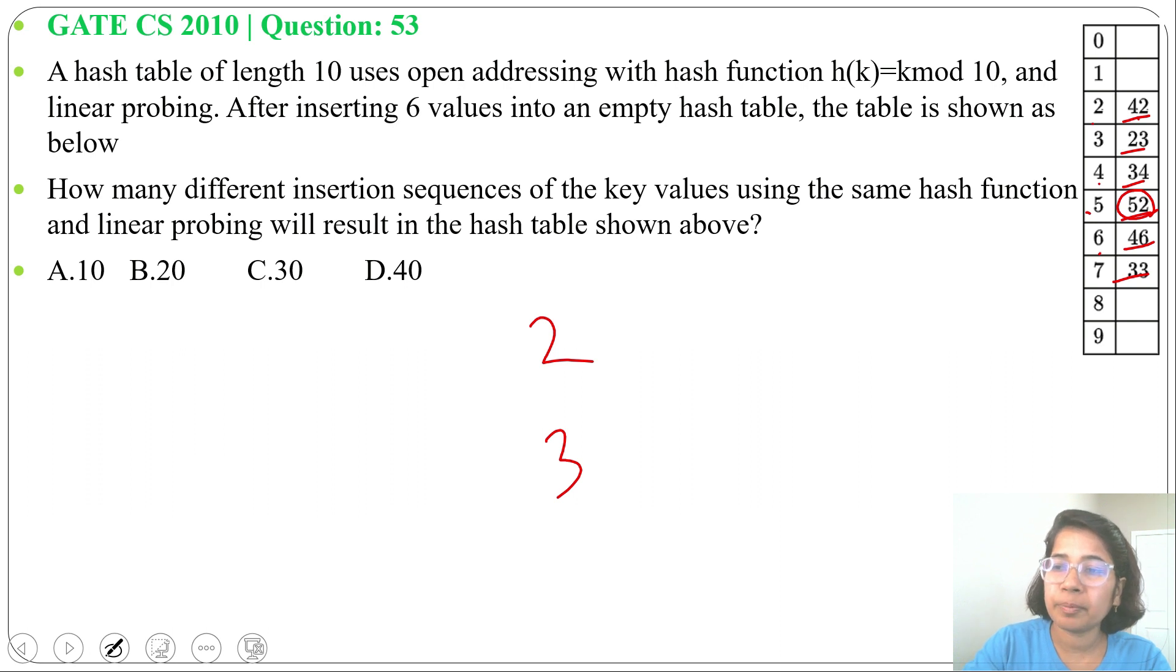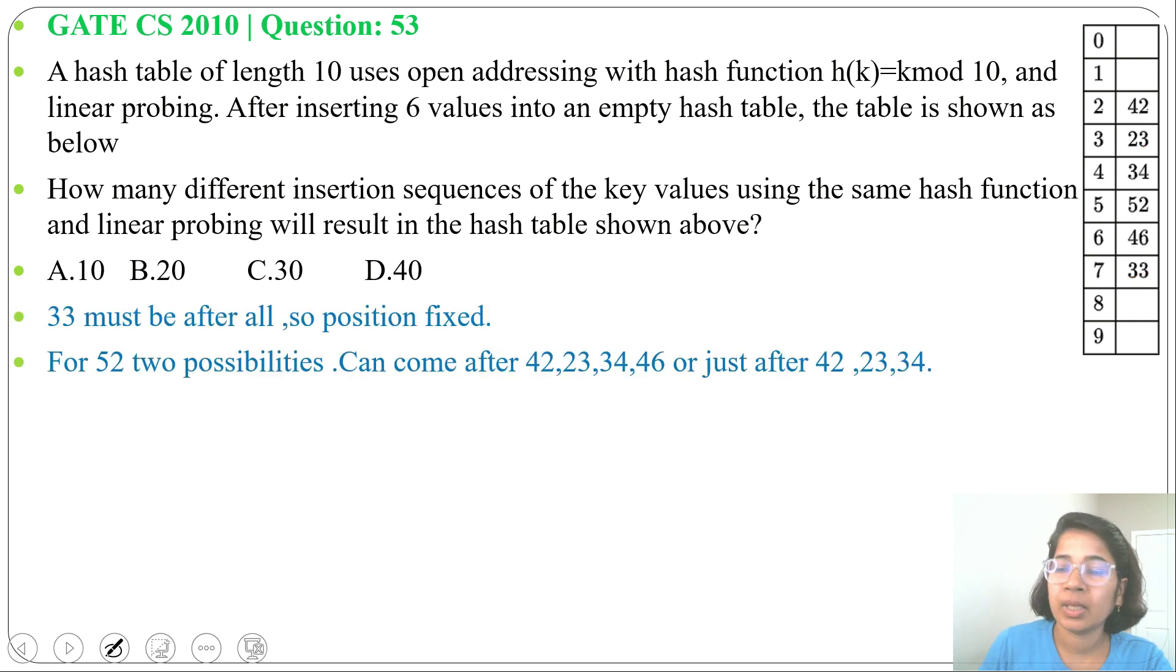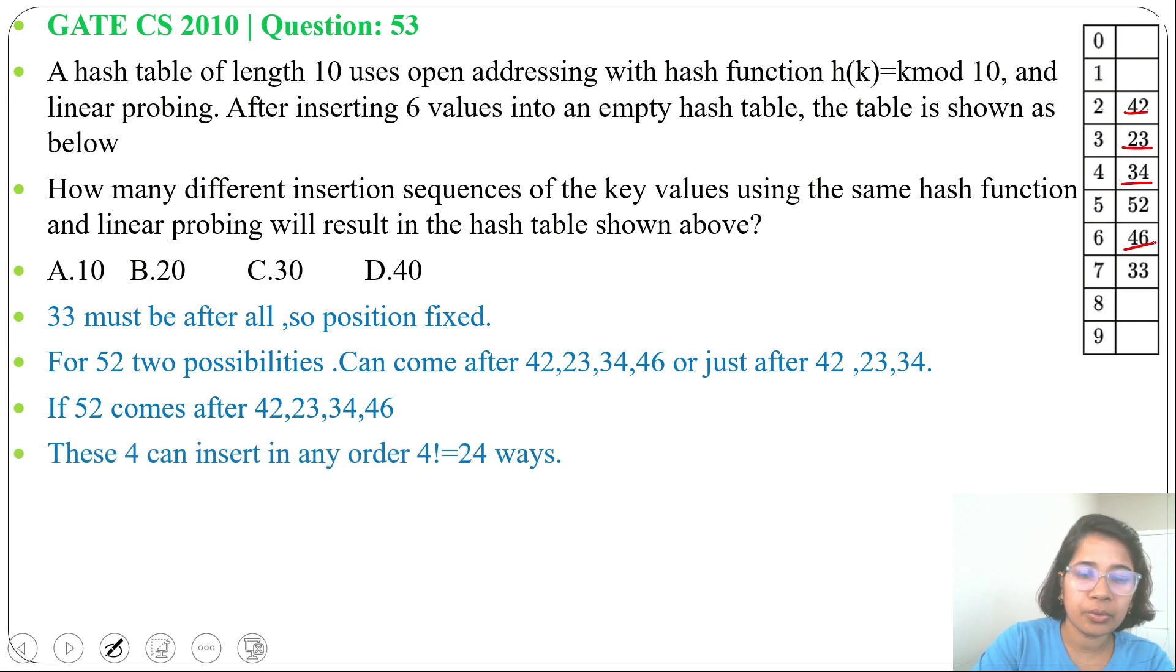52 should be after these 3 slots, that's why it's at 5th slot. So when 52 is after 42, 23, 34 and 46, after these 4 keys then there will be 4 factorial ways. 4 factorial ways we can arrange these 4 keys. 4 factorial equals to 24.